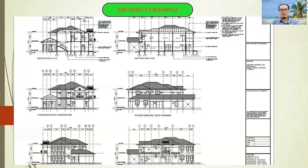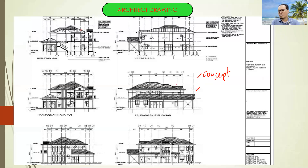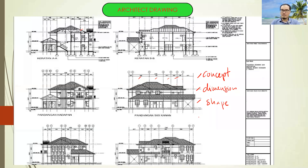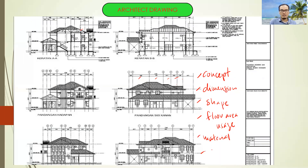The architectural drawing is a technical drawing of buildings that falls within the definition of architecture. Usually it gives information about the concept of the building, the dimension from grid line to grid line, the shape of the building, the floor area usage, and the materials to be used.